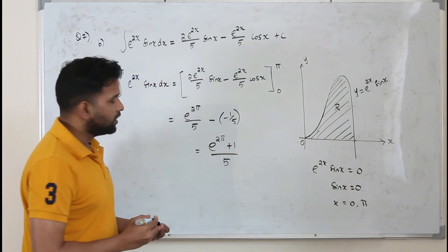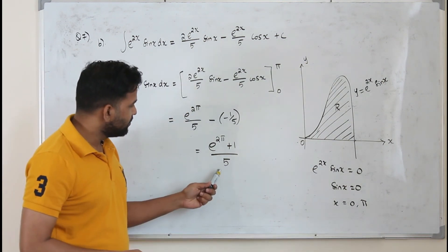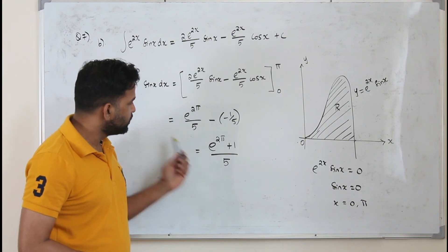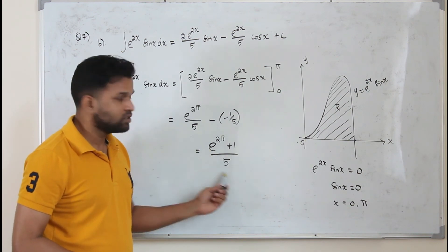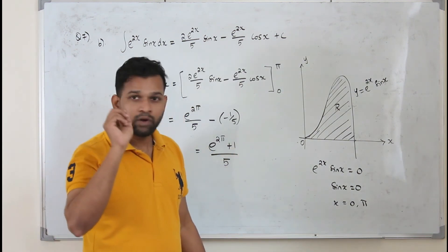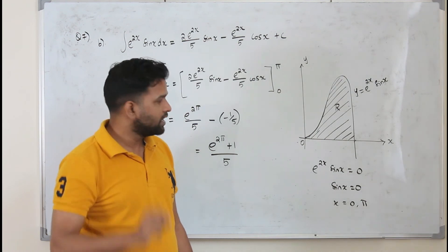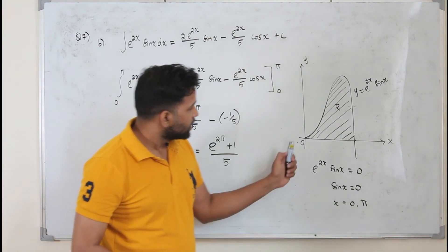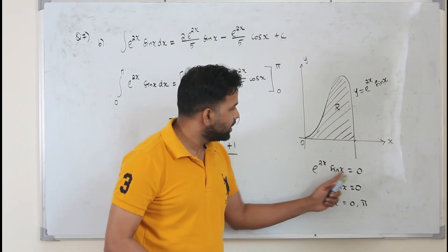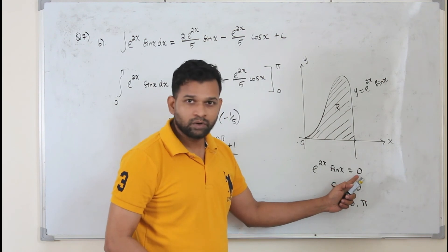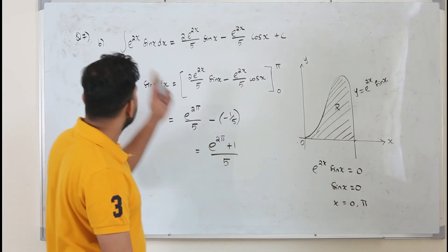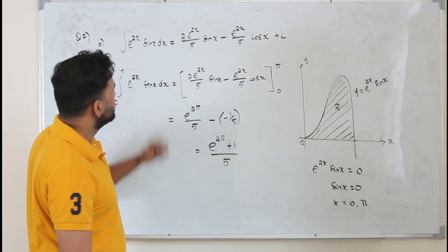The question asks you to prove the area equals e to the power 2pi plus 1 divided by 5. The only slightly tricky part is finding the limits by equating y to 0 to find the x values and then substituting them in.